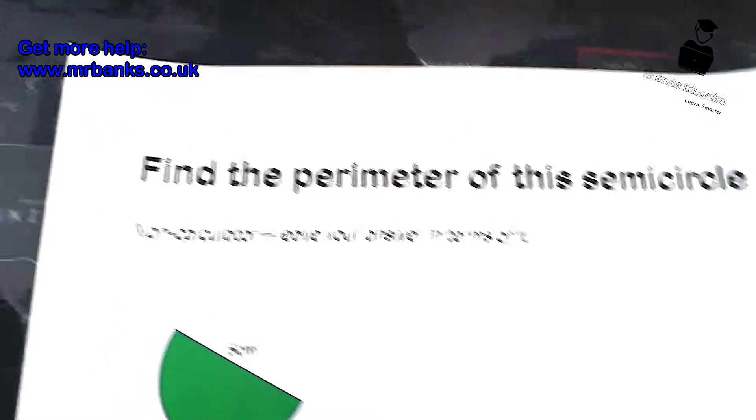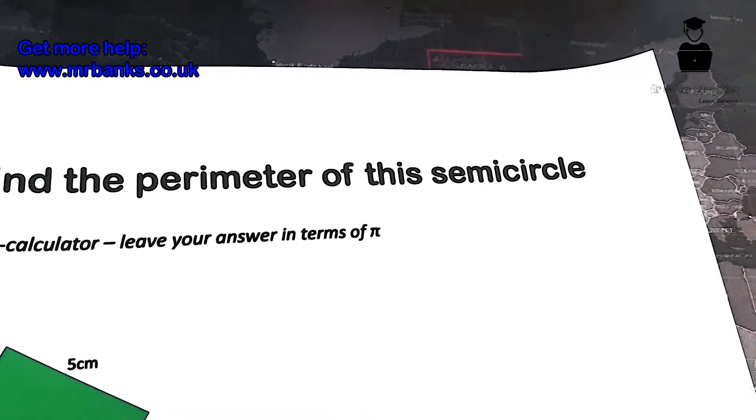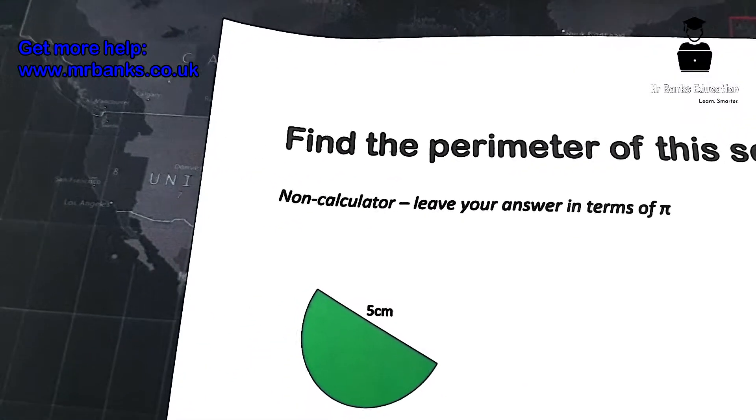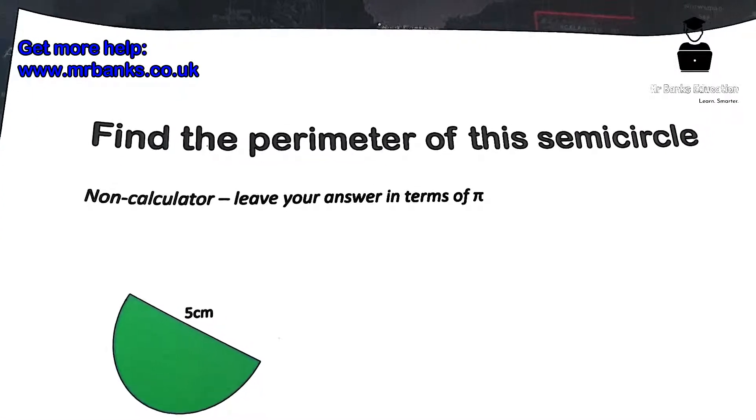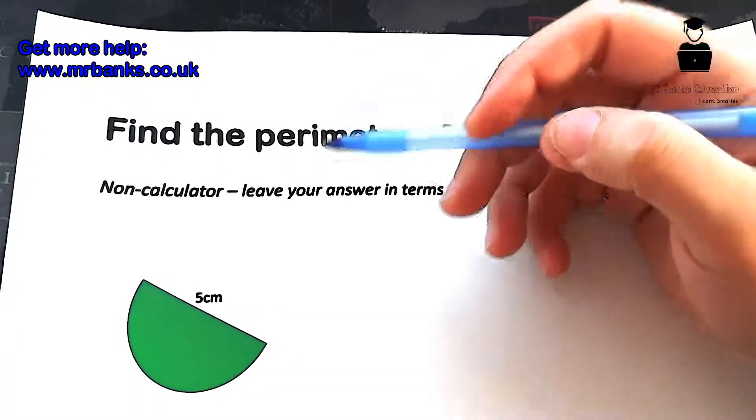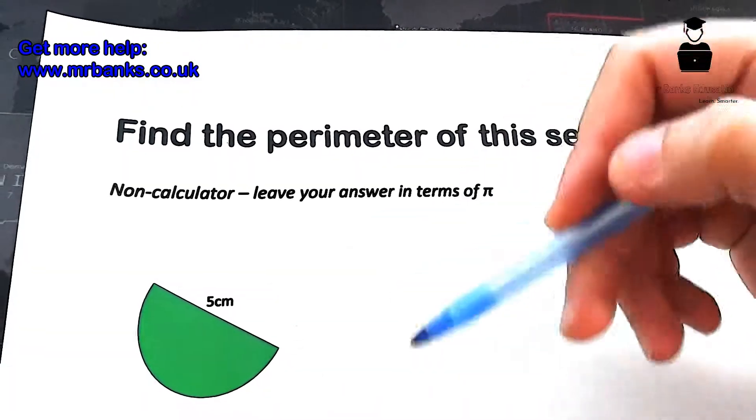Okay, so we have a question here today: find the perimeter of this semicircle. It's a non-calculator question and we need to leave our answer in terms of π. So the perimeter of a circle, let's think of the